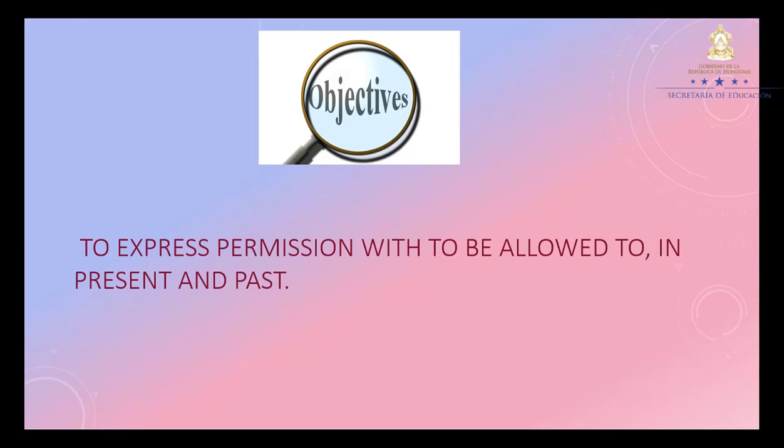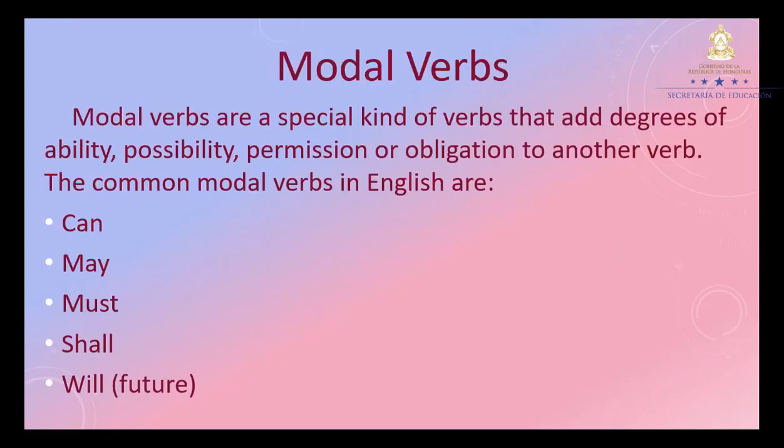Objective: to express permission with 'to be allowed to' in present and past. Modal verbs. Modal verbs are a special kind of verbs that add degrees of ability, possibility, permission, or obligation to another verb. The common modal verbs in English are: can, may, must, shall, will.